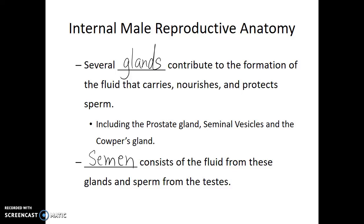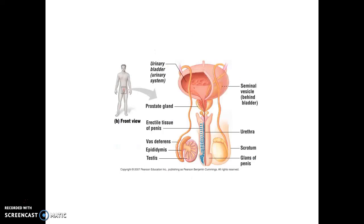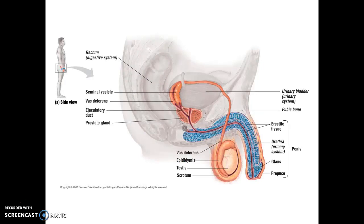Semen is the material released during ejaculation. Here we see a diagram of the male reproductive anatomy. The testes are the male gonads and are external structures carried within the scrotum. There is a tube leading from each testis known as the vas deferens, which carries sperm cells internally into the male's abdominal cavity. The vas deferens meet the seminal vesicles anterior to the prostate gland. The prostate gland has a Y-shaped intersection and actually determines whether the reproductive system or the urinary system has access to the urethra. The urethra runs through the length of the penis and can connect either to the urinary bladder or to the rest of the glands of the male reproductive system.